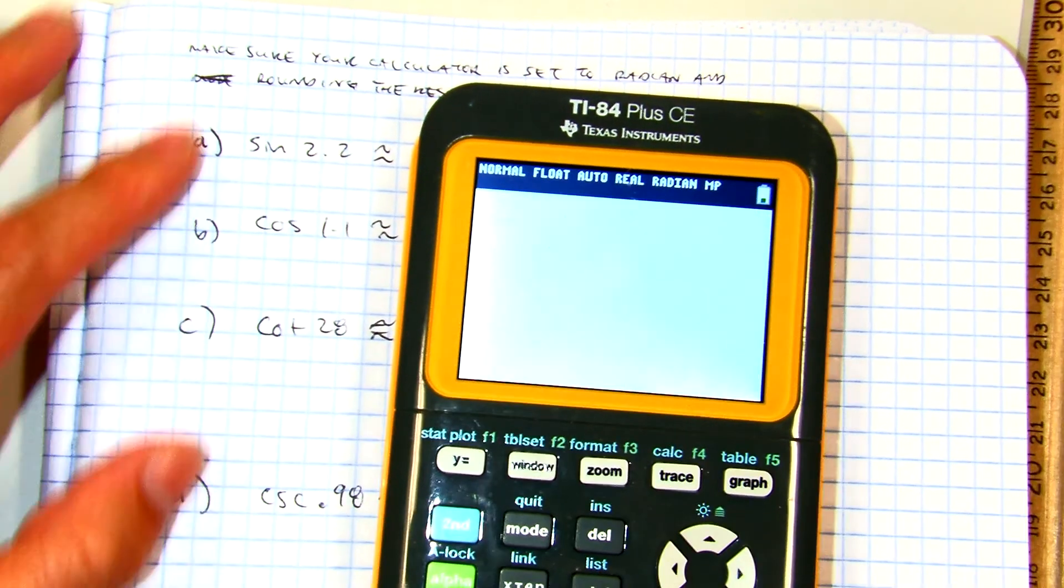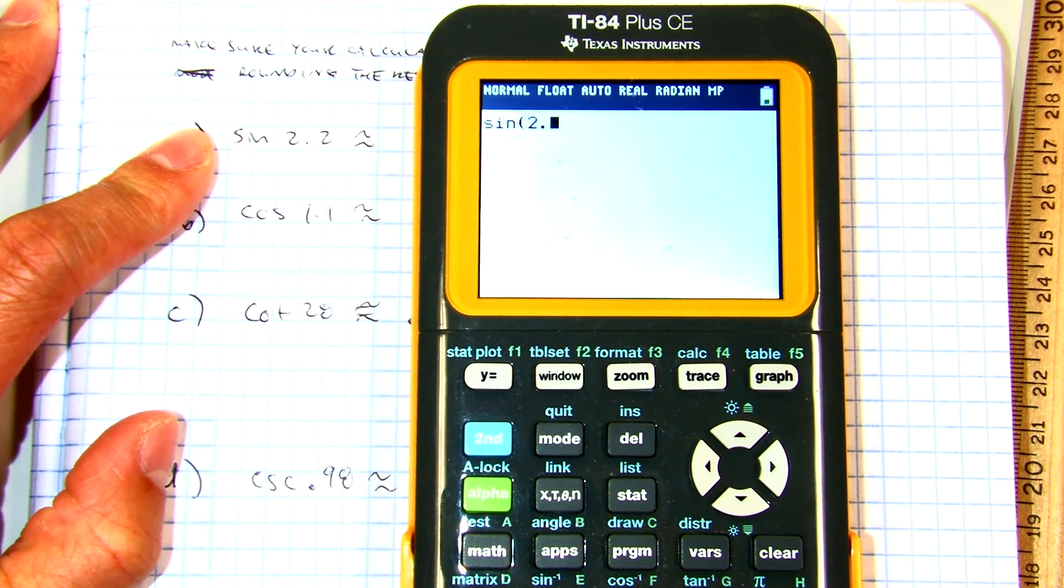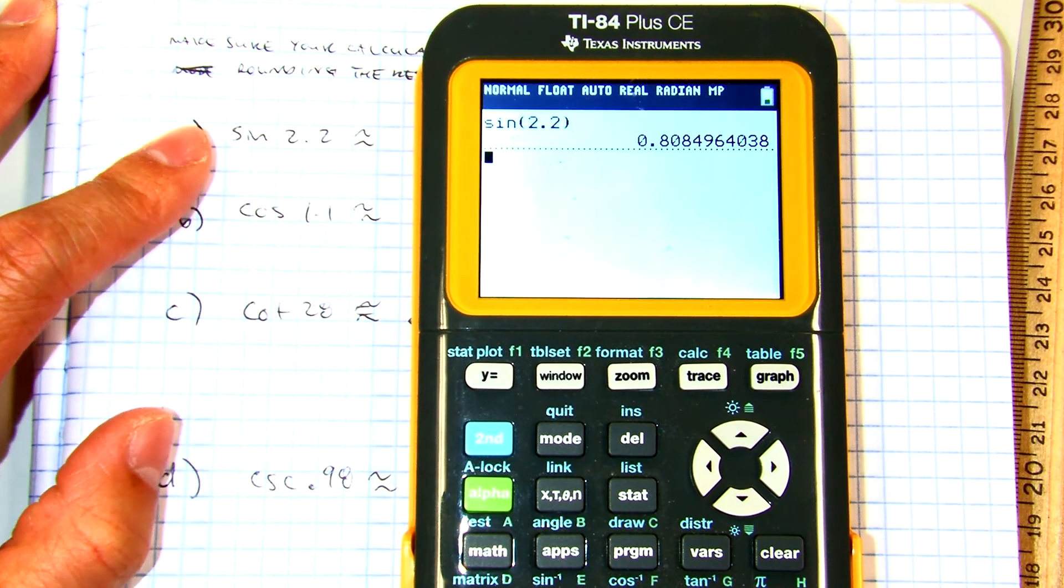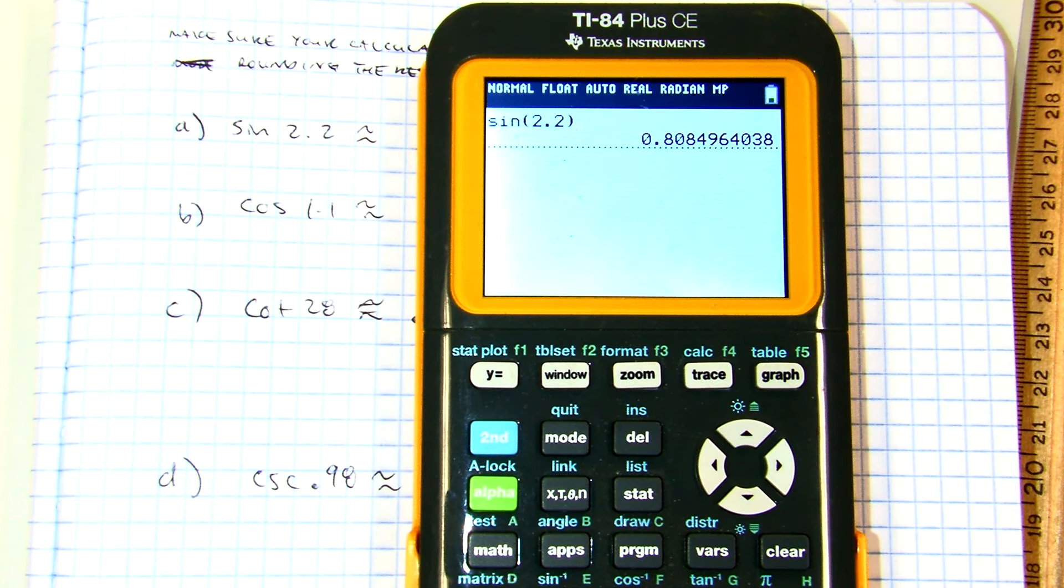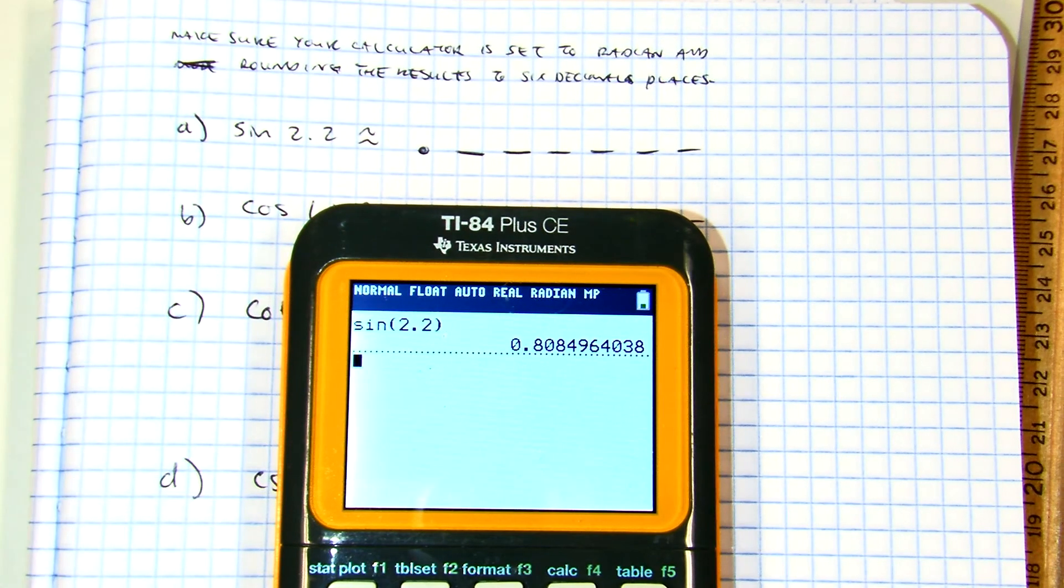And now I'm going to type in sine of 2.2 and I get this answer. Now this one asks you to do how many decimal places? Six. So a little bit different, right?